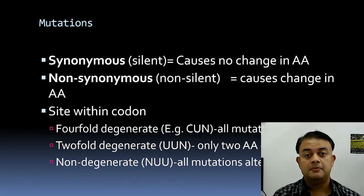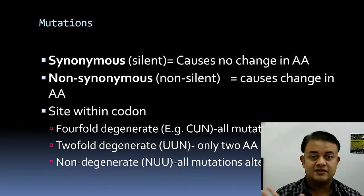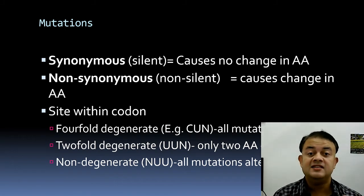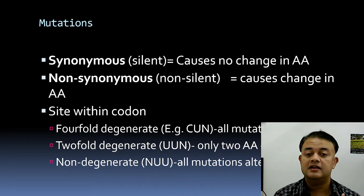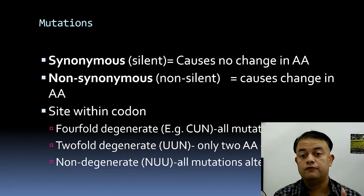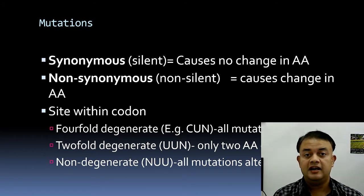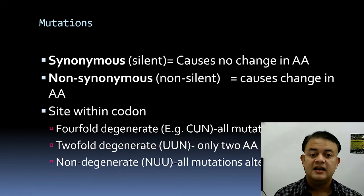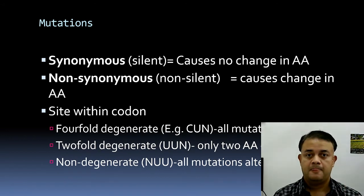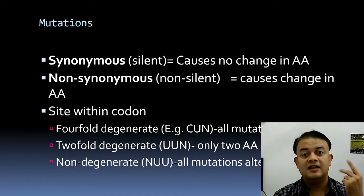Mutations or substitutions can be synonymous (silent — no amino acid change) or non-synonymous (non-silent — changes amino acid). Fourfold degenerate sites are positions where any mutation is synonymous — typically the third codon position. Some sites are twofold degenerate, such as UUN, where only two of four possible substitutions call for the same amino acid.